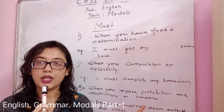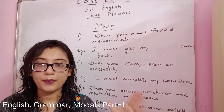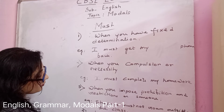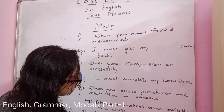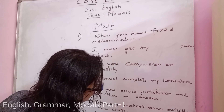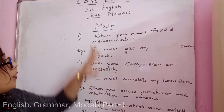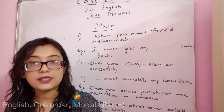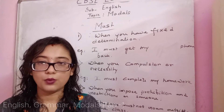Next, MUST is also used when someone is loyal to their duty — to show loyalty. For example: Soldiers must be loyal to their country or to their duty. So MUST is used when you have fixed determination, necessity, compulsion, when you are prohibiting or restricting someone, when expressing loyalty, or when expressing a strong will. Then you can use the word MUST.